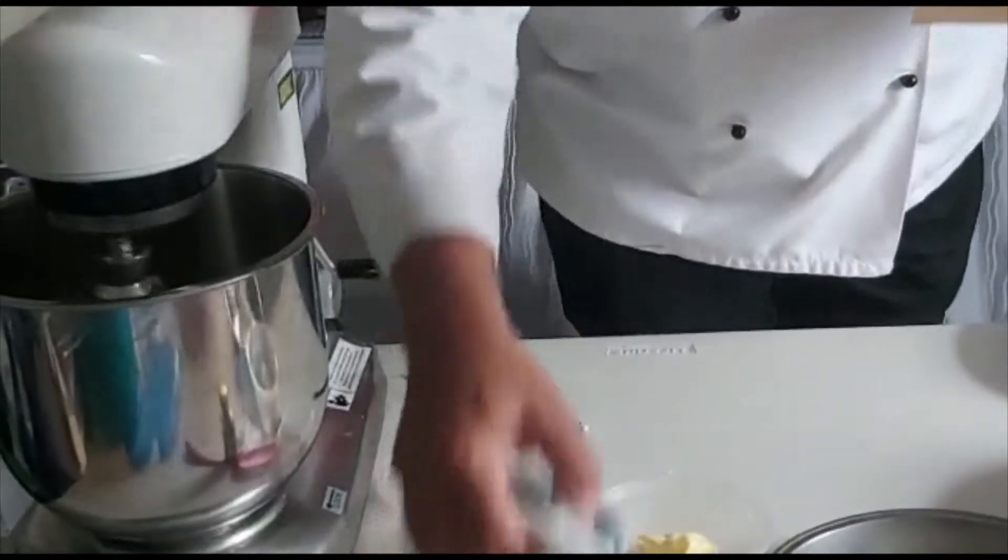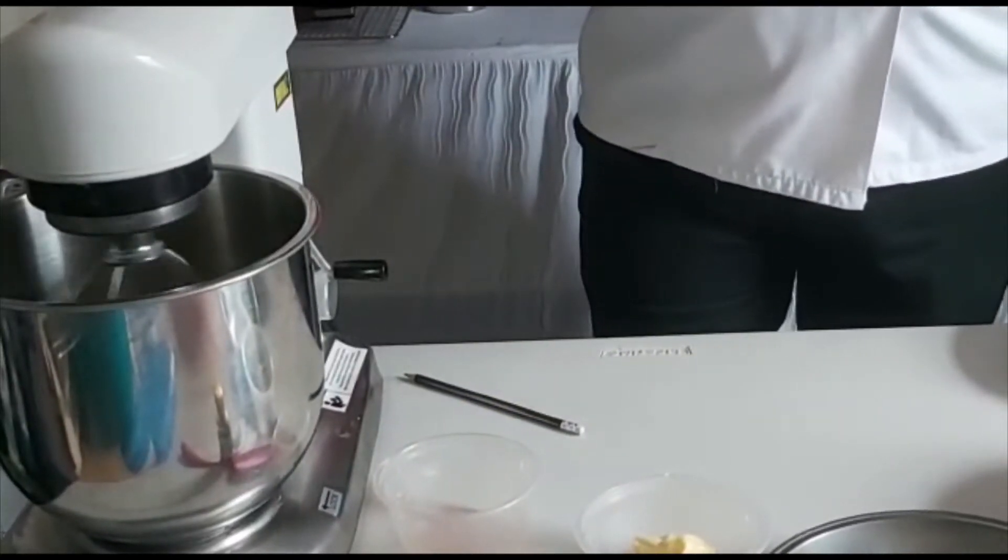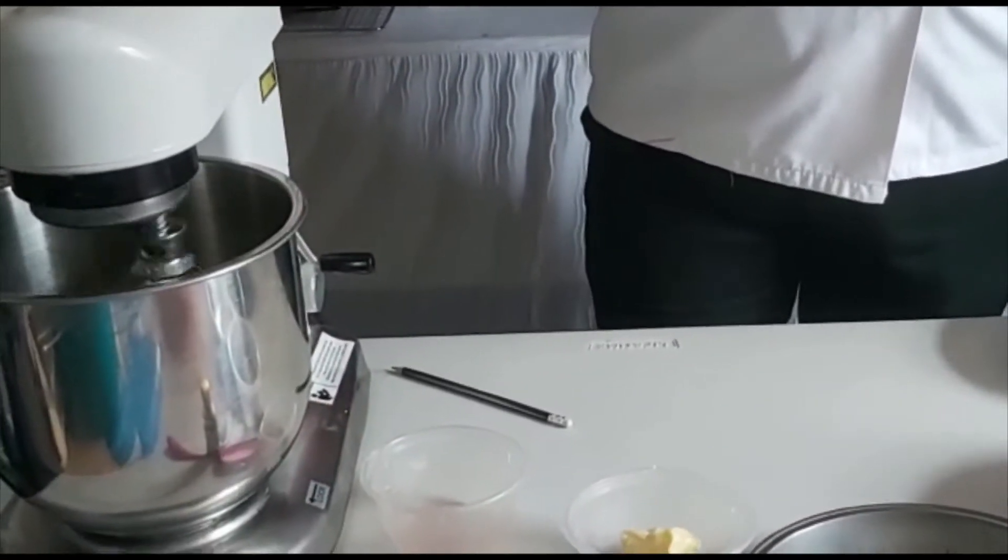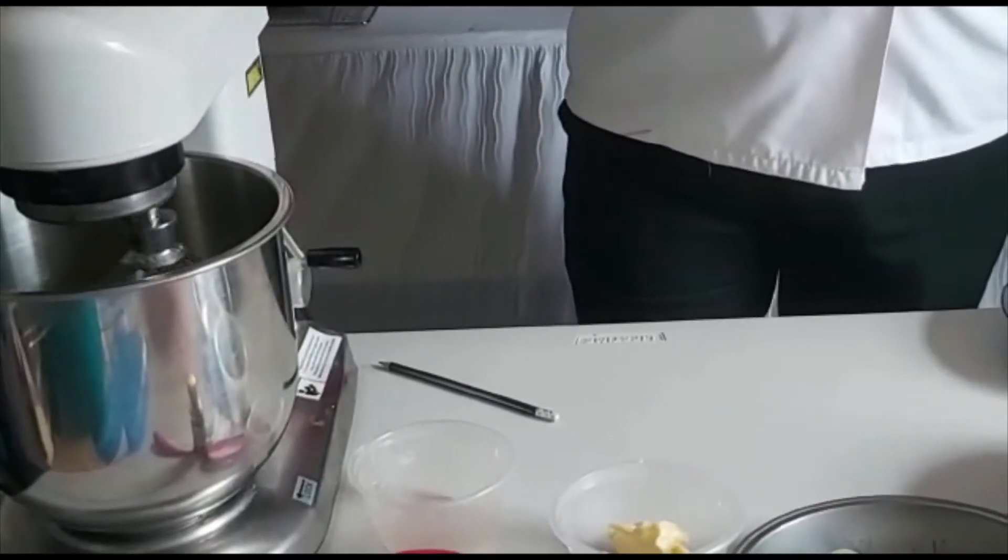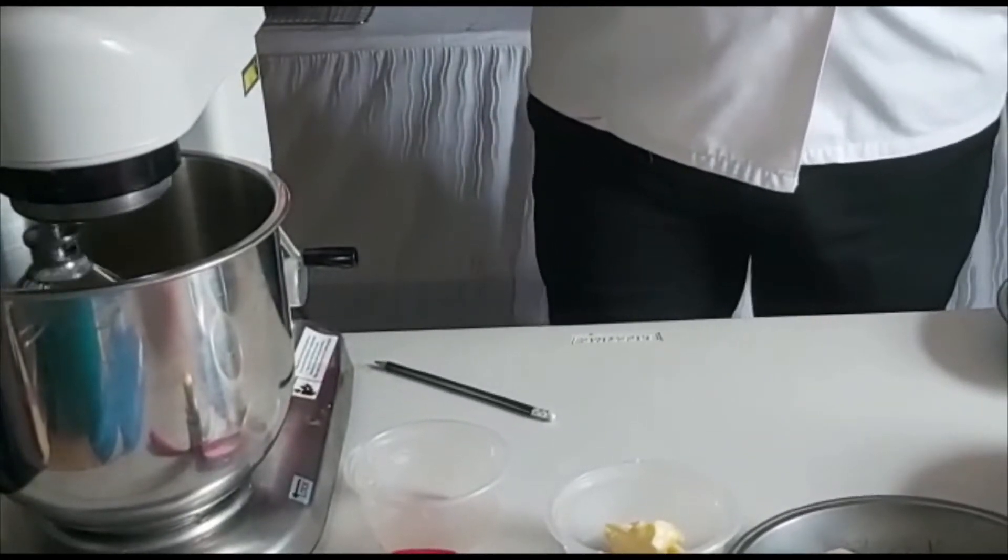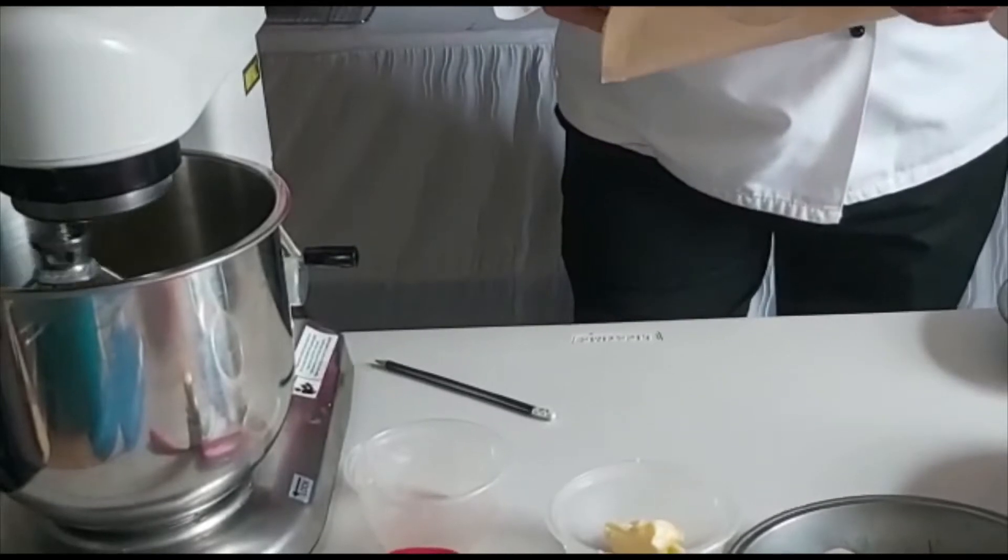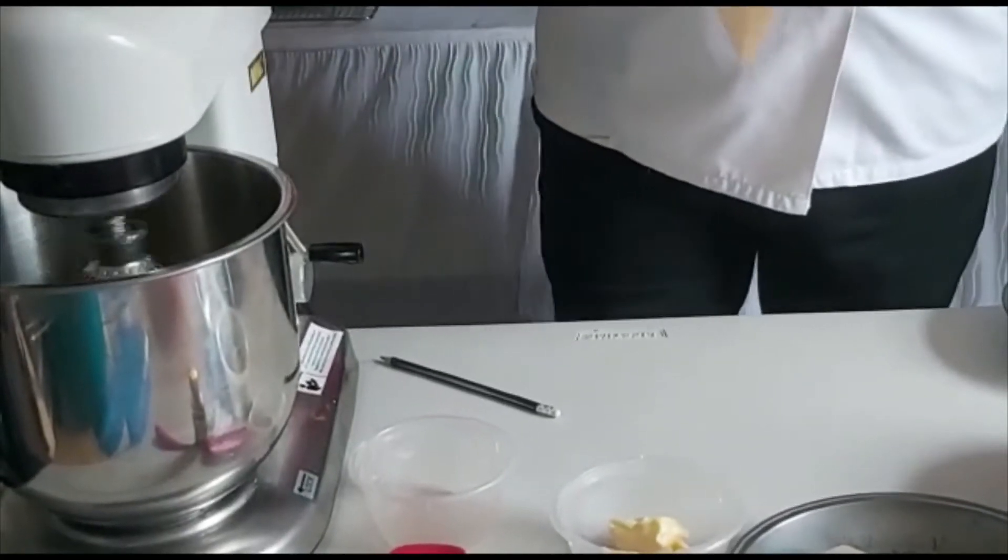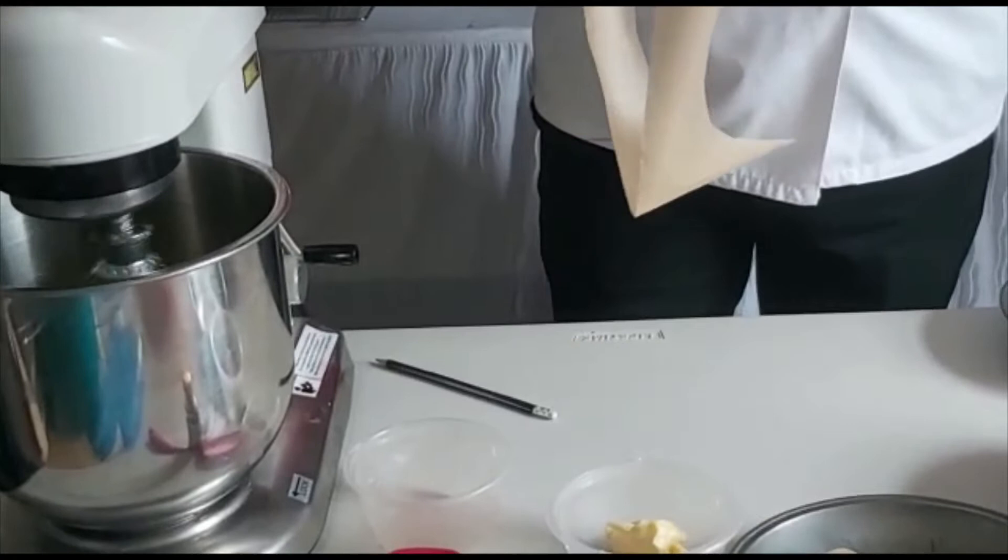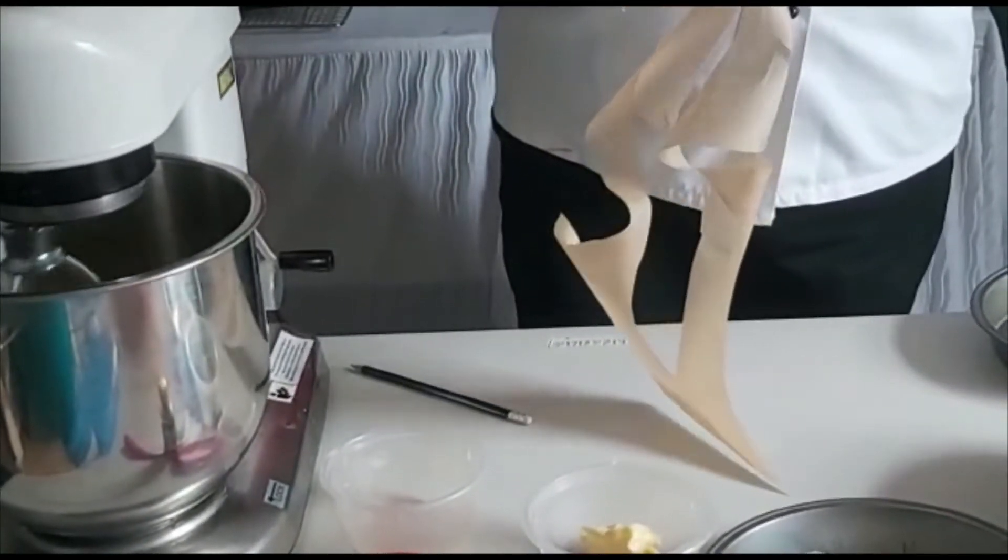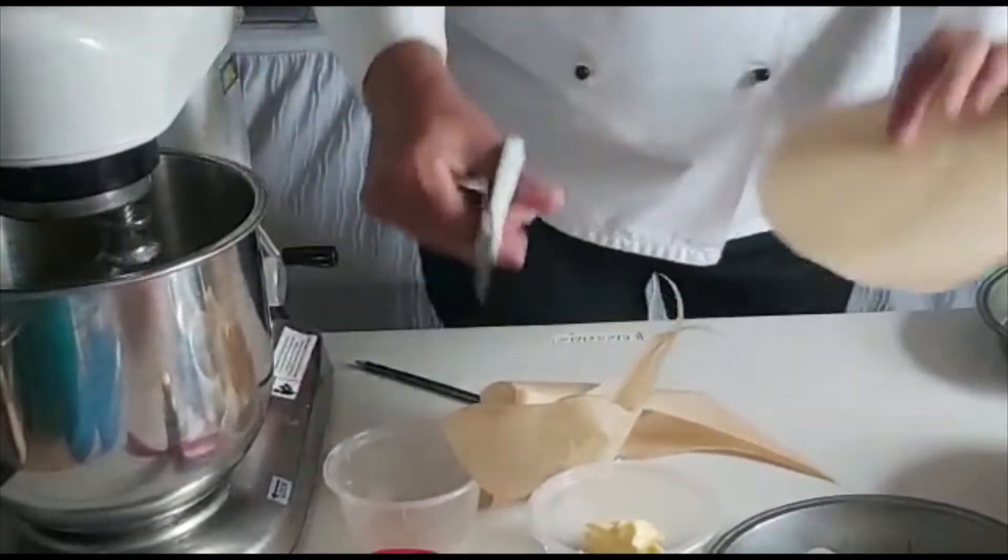Now I'm going to cut around the circle. Just be careful when you're using scissors. And basically this will go on the bottom of the cake tin to help it stop sticking.